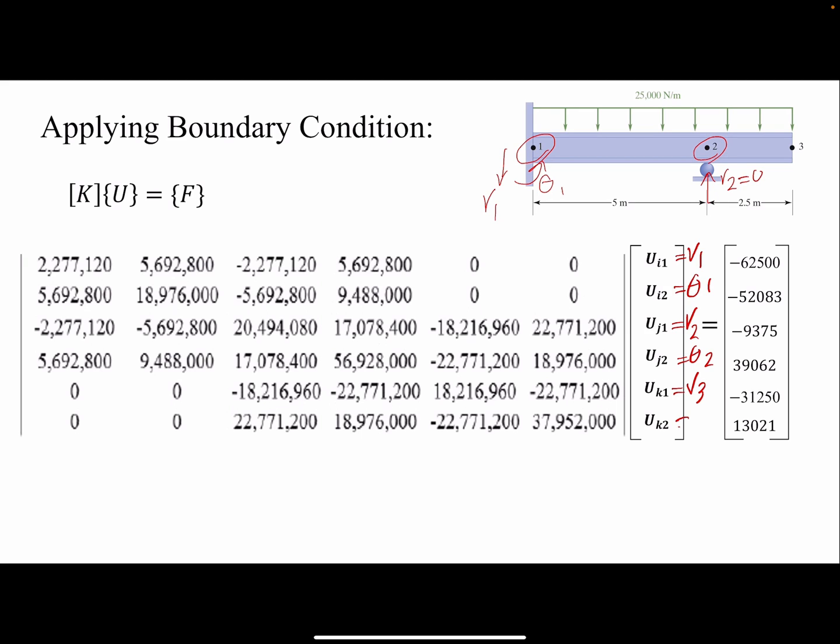Because v1 is zero, we're going to set the first row and the first column to zero or remove the first row and first column. You have to remove the second row and second column as well as the third row and third column. After applying the boundary condition, we are technically dealing with a 3 by 3 matrix, which makes our job much easier.